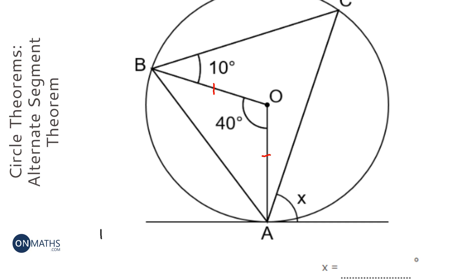We do 180 degrees, angles in a triangle, take away the 40, which is 140 degrees. And then we do 140 divided by 2 because we know the two remaining angles, which are this one here and this one here, are going to be equal. So that's 70 degrees.